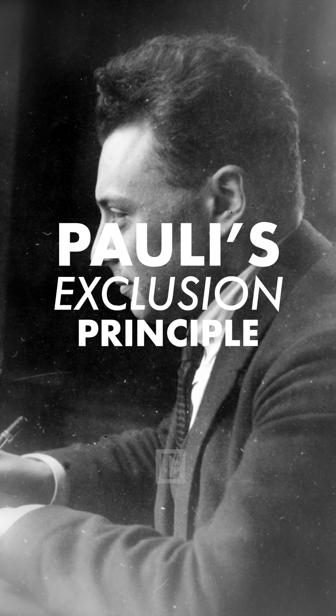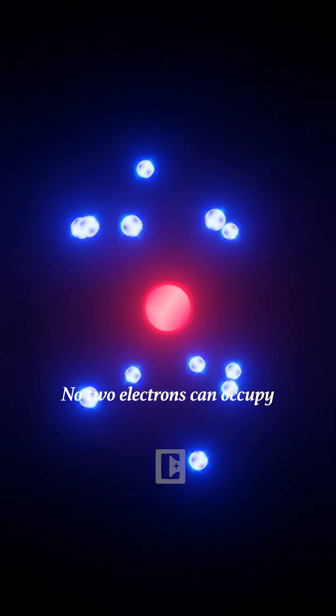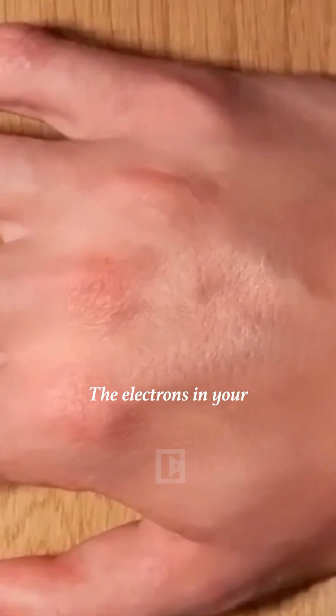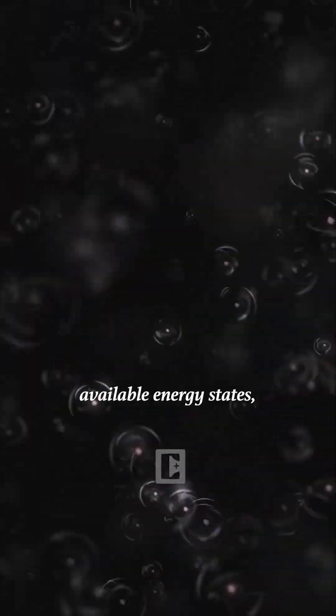First, Pauli's exclusion principle. No two electrons can occupy the same quantum state. The electrons in your atoms are already in the lowest available energy states, and so are his. This quantum restriction prevents the electron clouds from overlapping.